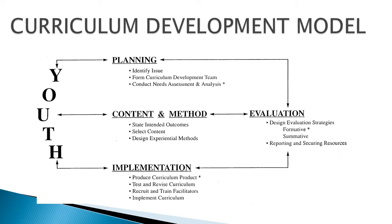After that, it is very important to evaluate. The planning methods include organizing, staffing, directing, and controlling. Evaluation involves designing strategies — different methods such as formative assessment, reporting, and securing resources. Implementation is what comes after planning, organizing, content methods, and evaluation — it determines what is suitable and what should be planned. This falls under the term 'implement curriculum,' which helps to produce the curriculum product, test, revise curriculum, recruit and train facilitators, and implement the curriculum.